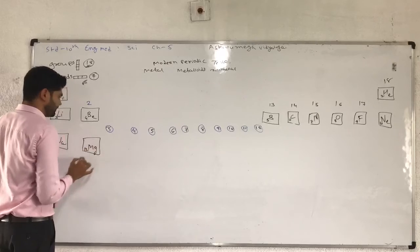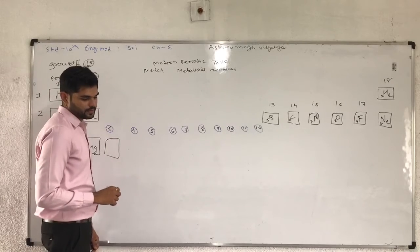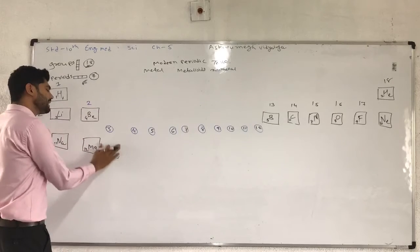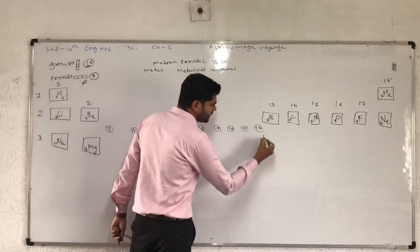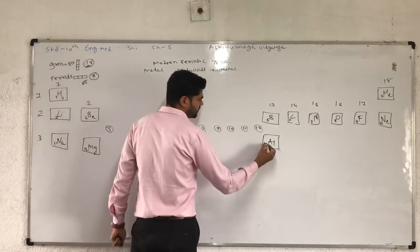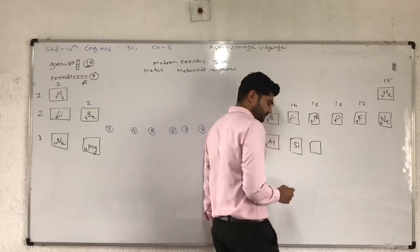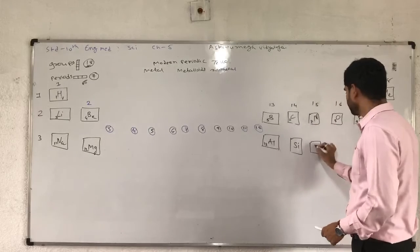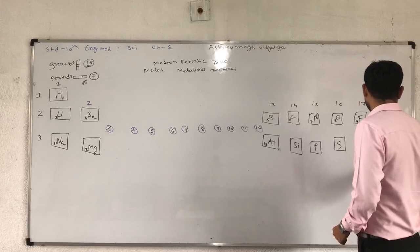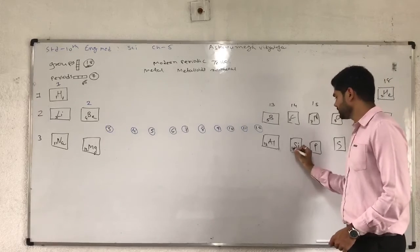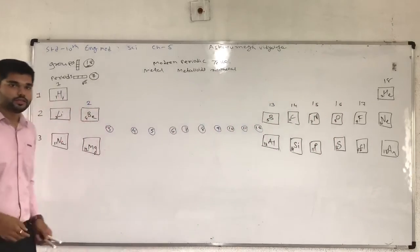Third period starts with sodium and magnesium. Sodium is in group 1, magnesium in group 2, then group 13 has aluminum, group 14 has silicon, after silicon is phosphorus, then sulfur, chlorine, and argon. That's 13, 14, 15, 16, 17, and 18 groups.